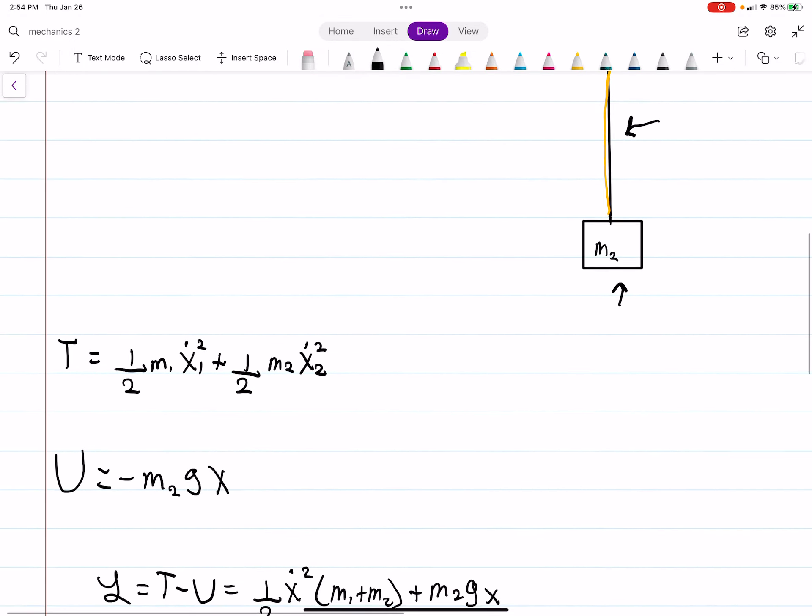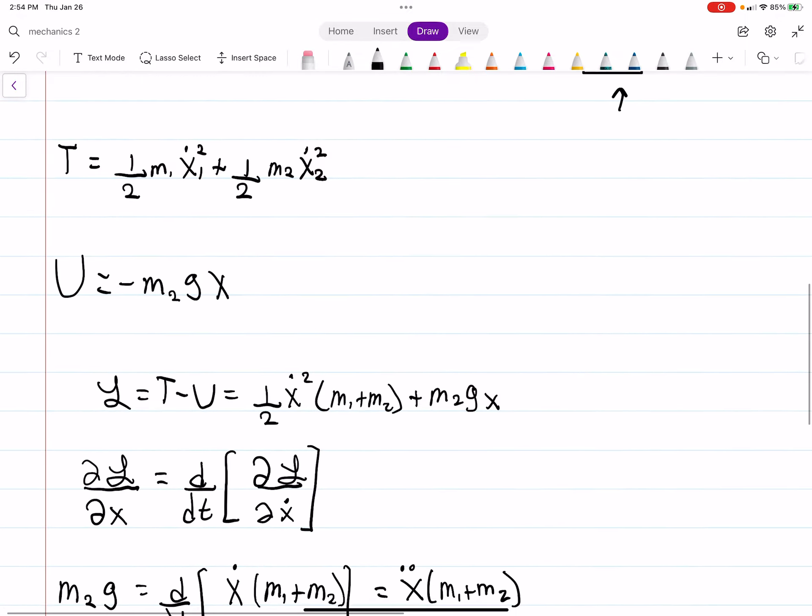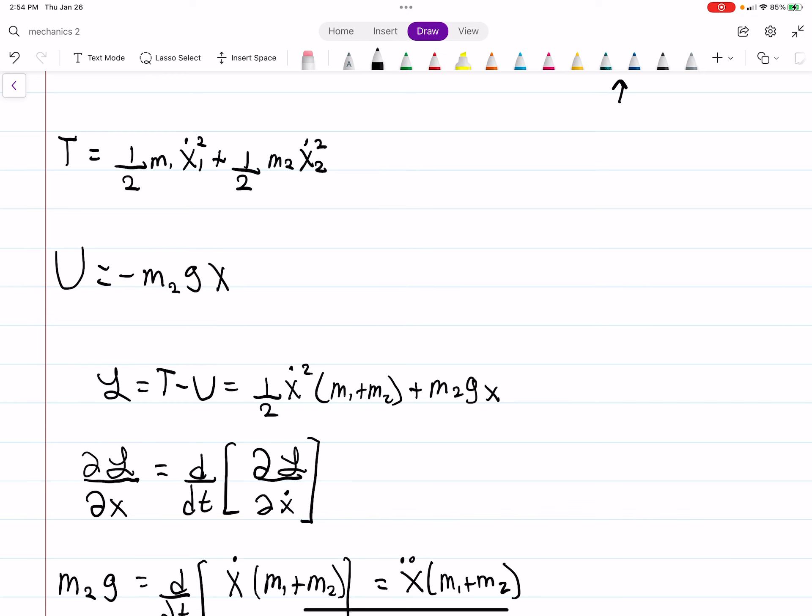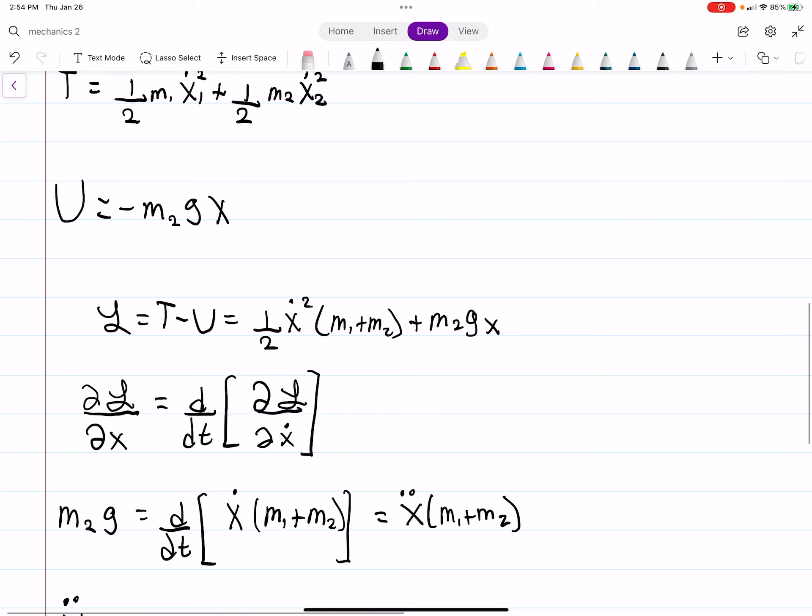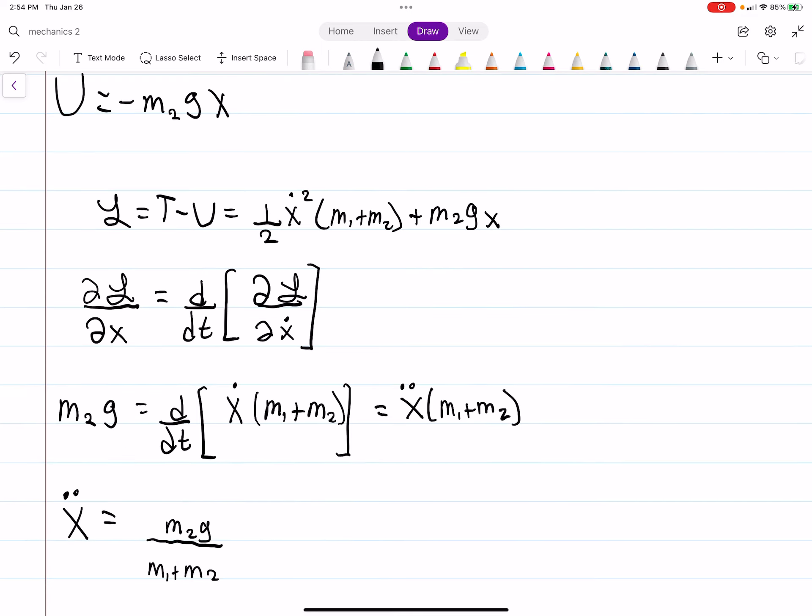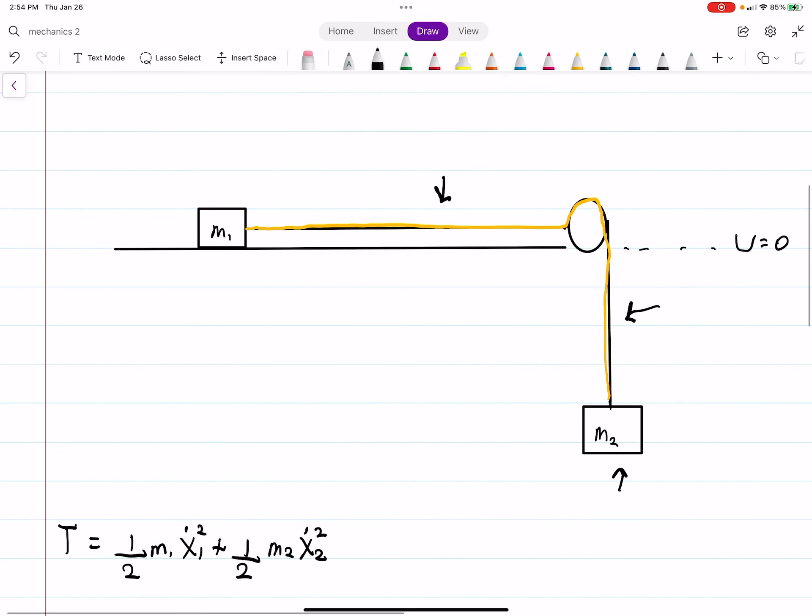Hopefully that makes sense. We just wrote down the kinetic energy, we wrote down the potential energy. And from there, we could write down our Lagrangian. With our Lagrangian, we can do our Euler Lagrangian. And with our Euler Lagrangian, we can solve for position.